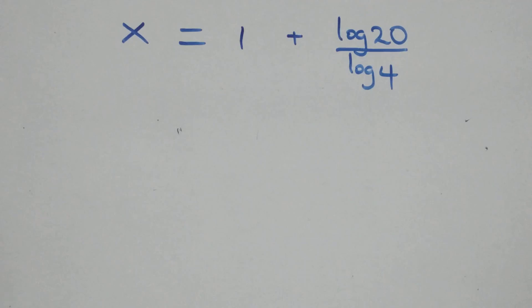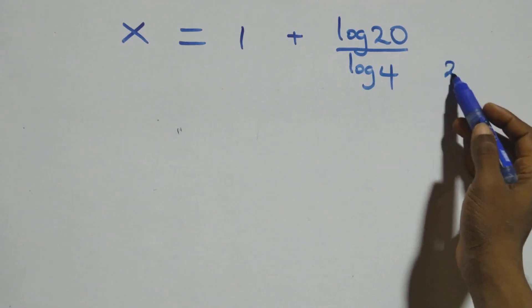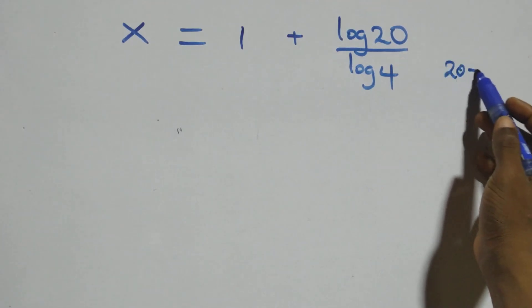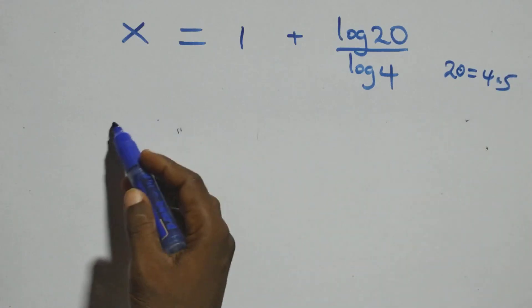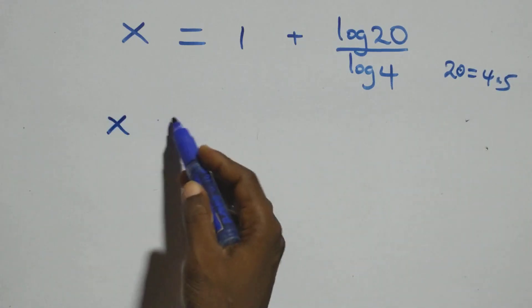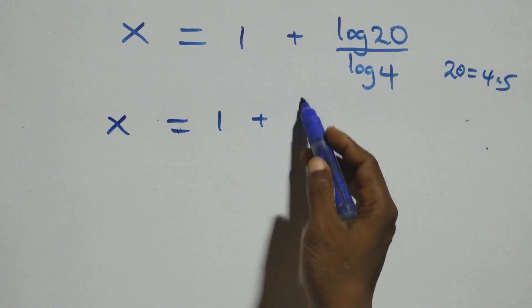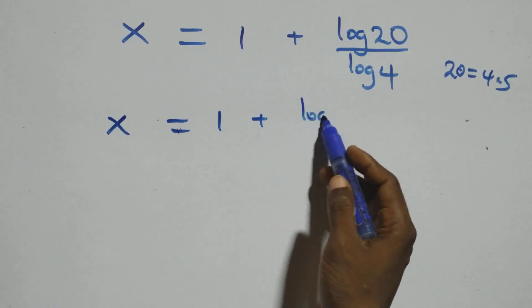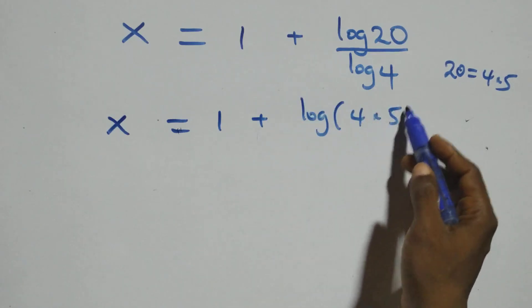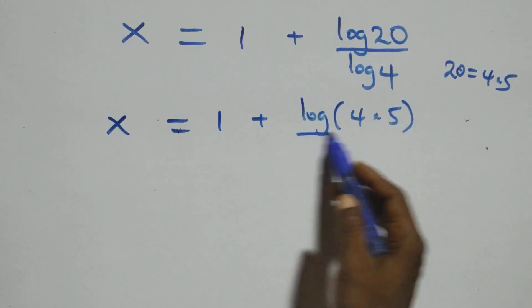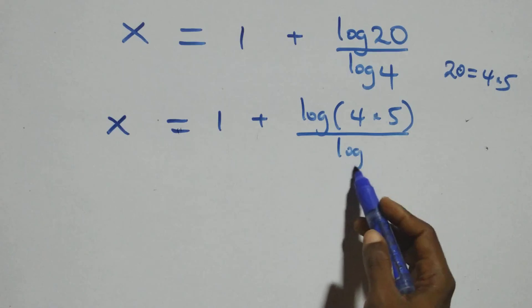Next step: we can also write 20 as 4 times 5. So we have x equals to 1 plus log of 4 times 5, over log 4.